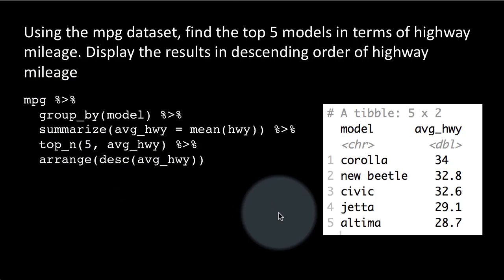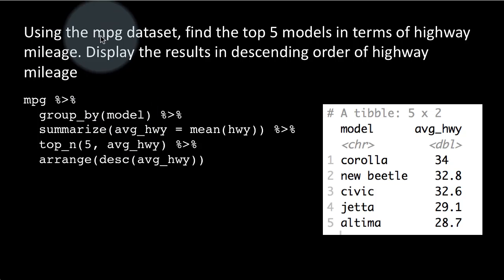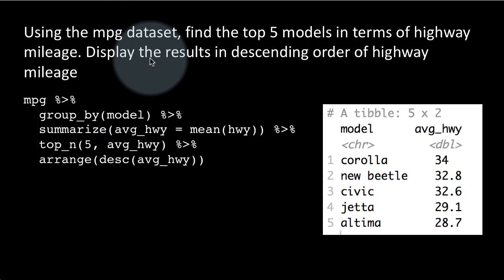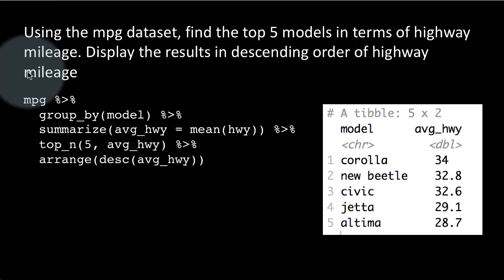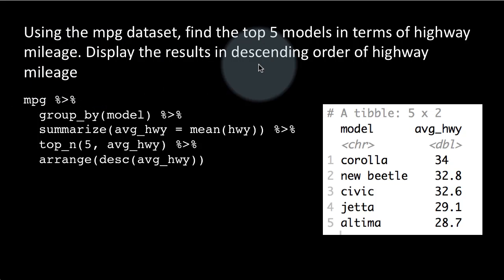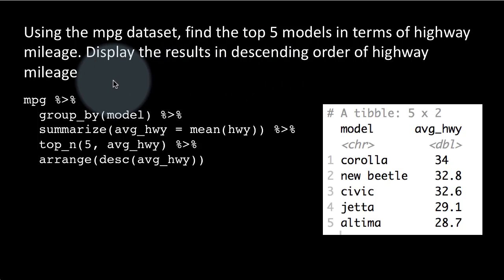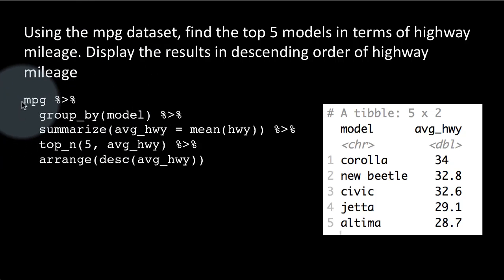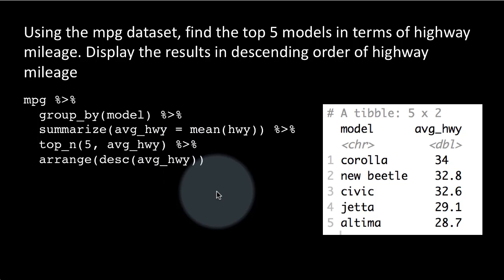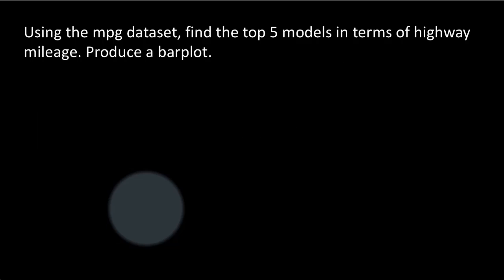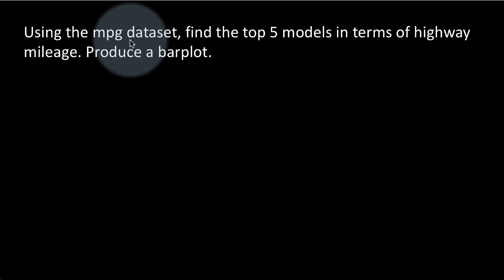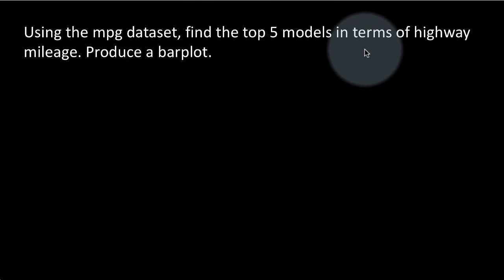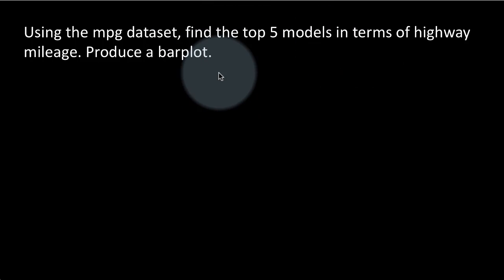You can do these kinds of operations quite easily by invoking several dplyr functions with a pipeline. dplyr makes these kinds of things very easy. We can imagine any kind of analysis — it might be pretty complicated in terms of summarizing and grouping — but that's the problem for dplyr to solve, not for us. All we have to do is to state what we want, and the result will come out. Now, use the MPG dataset to find the top five models in terms of highway mileage and produce a bar plot.